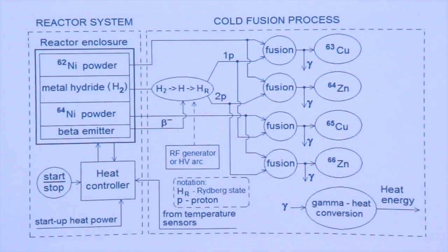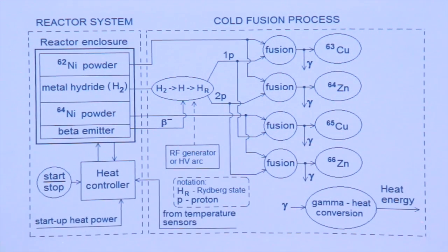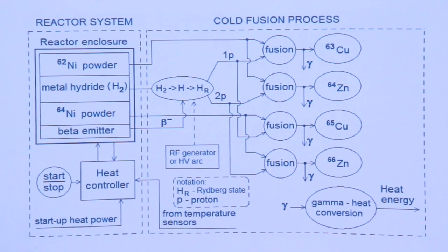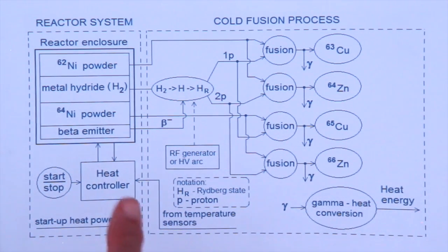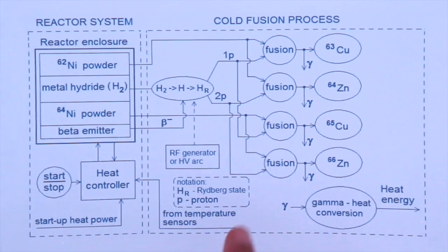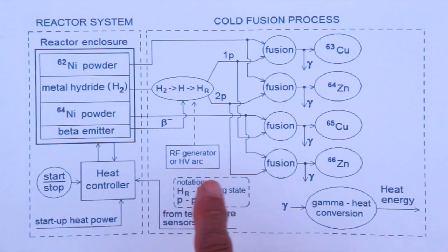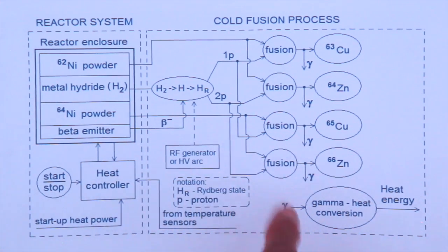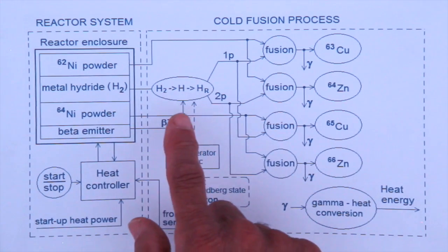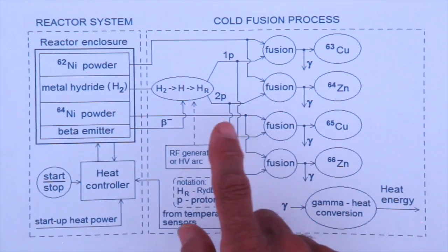This option in fact covers the reactor design by Andrea Rossi and the research of Sergio Focardi. The same process is also similar to Defkalion, but in Defkalion they don't use a beta emitter — they use a high voltage arc. The purpose of the arc is the same: first to dissociate the molecular hydrogen and then to create the Rydberg state.